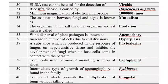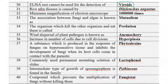ELISA cannot be used for the detection of viroids. ELISA is used to detect viruses but cannot detect viroids, so PAGE (polyacrylamide gel electrophoresis) is used for detection of plant viroids. Rice ufra disease is caused by the nematode Ditylenchus angustus.